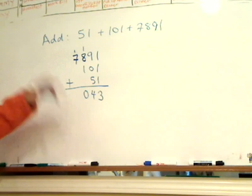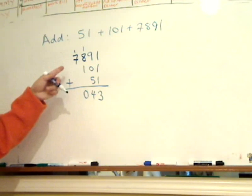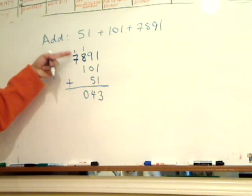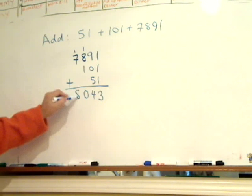We place a 0 as a placeholder and we carry that 1 over to the other side, which is the thousands. So 1,000 plus 7,000 is 8,000.